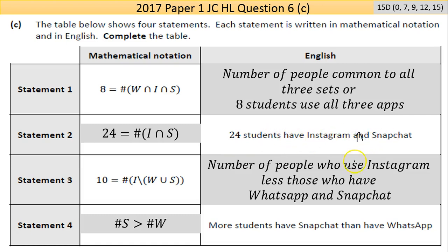Statement 3: 10 equals the number of those who like Instagram less than or take away those who like WhatsApp combined with those who like Snapchat.